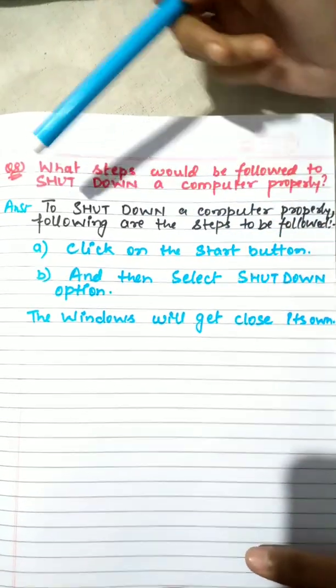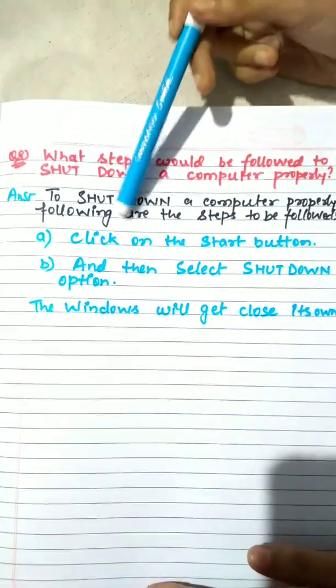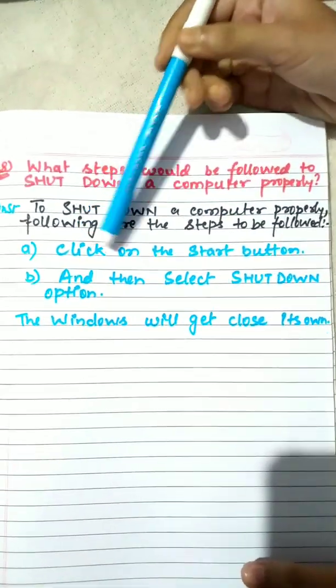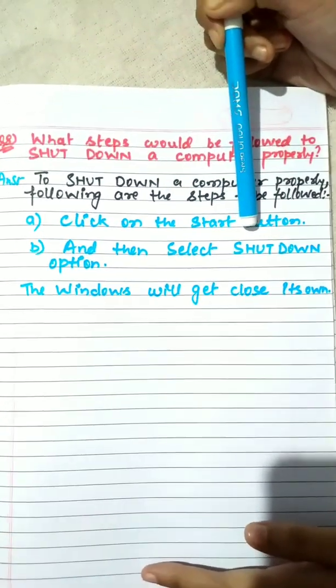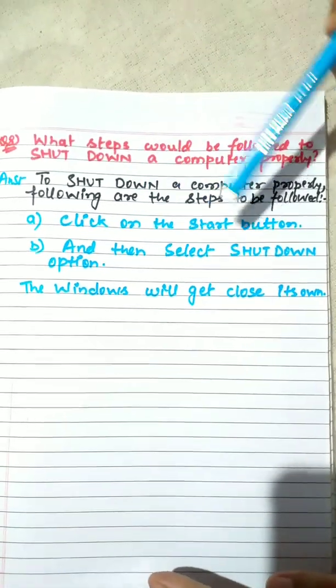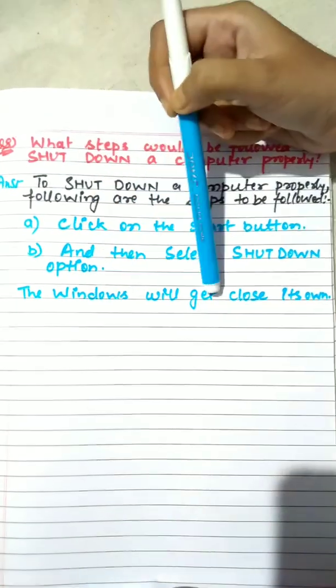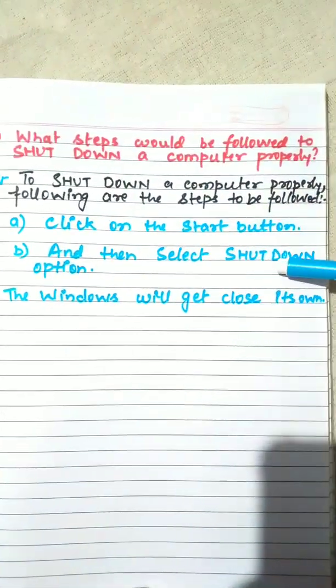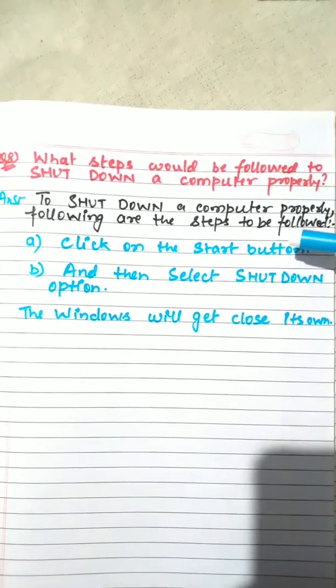To shut down a computer properly, following are the steps. First, click on the start button. Start button is on the very left corner of the taskbar. From that start button you have to select shut down. The windows will get closed on its own. After clicking on shut down, your windows get closed and the computer gets shut down.